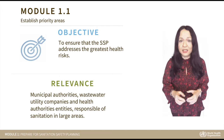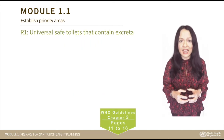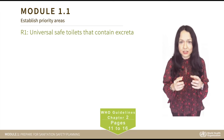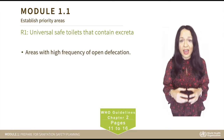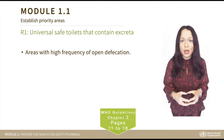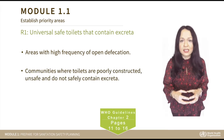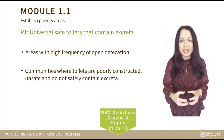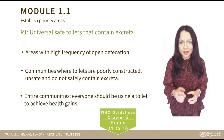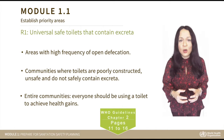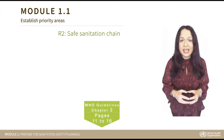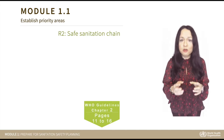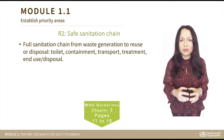While establishing the priority areas, keep in mind the recommendations given in the 2018 WHO guidelines on sanitation and health. Recommendation 1 talks about universal access and use of toilets that safely contain excreta. The guideline recommends prioritizing areas with high frequency of open defecation, communities where toilets are poorly constructed, unsafe, and do not safely contain excreta. Remember that in a community, everyone should be using a toilet to achieve health gains. Also, consider recommendation 2 about safe sanitation chains, which emphasizes including full sanitation chains from waste generation to reuse or disposal.